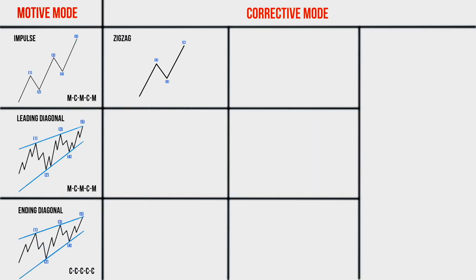We have considered all patterns of the motive mode. Now let's proceed to the waves of the corrective mode, starting with the zigzag. The zigzag is the simplest corrective pattern and it is the most common on the market. The zigzag consists of three sub-waves denoted by the letters A, B, and C. Waves A and C are formed in the motive mode and wave B is corrective. As a rule, the zigzag is a deep correction in relation to the previous trend.